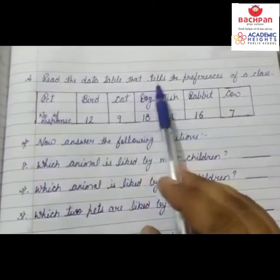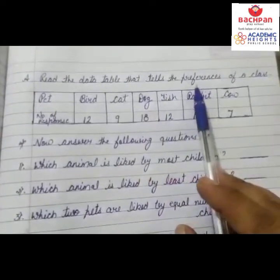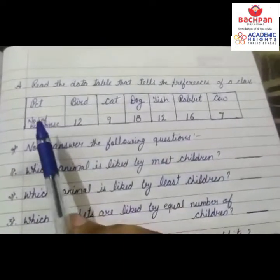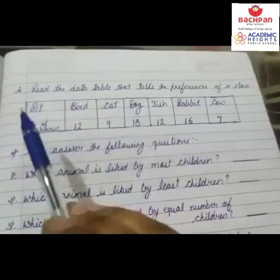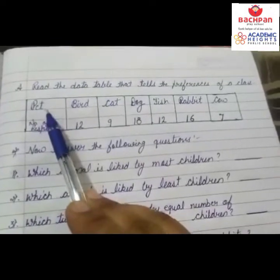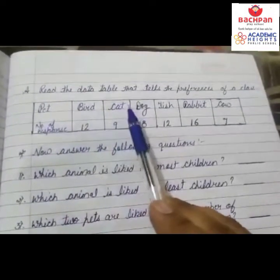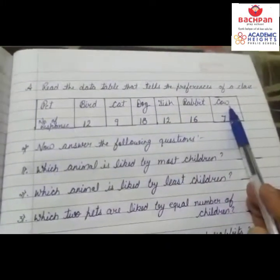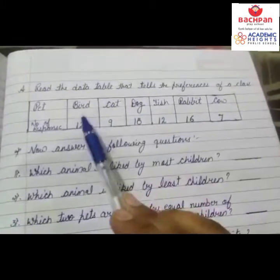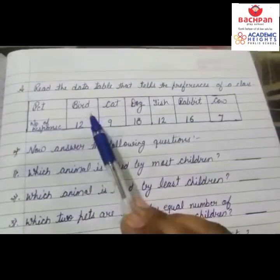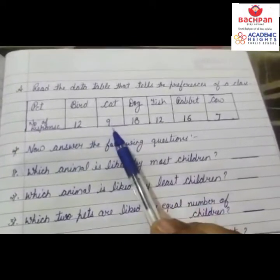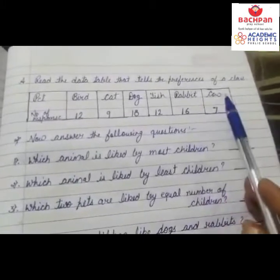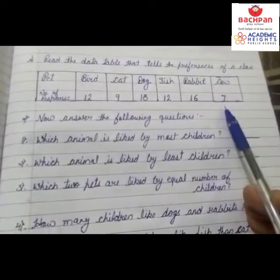Read the data table that tells the preferences of a class. Bachchi, ये देखिए, table जो दी गई है, इसमें pet है। Pet में bird भी है, cat भी है, dog भी है, fish, rabbit, cow। Number of responses — bird: 12, cat: 9, dog: 18, fish: 12, rabbit: 16, cow: 7.